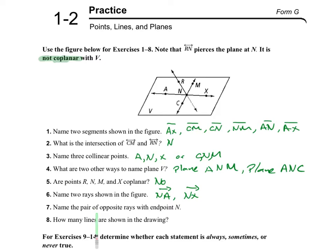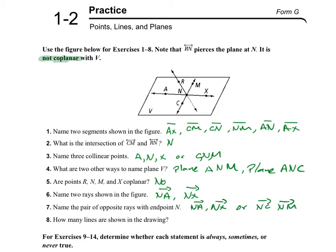Name the pair of opposite rays with point N. So in this case, N is my endpoint, and opposite rays form a line. So the pairs are ray NA, ray NC, and ray NM — those are opposite ray pairs sharing endpoint N.